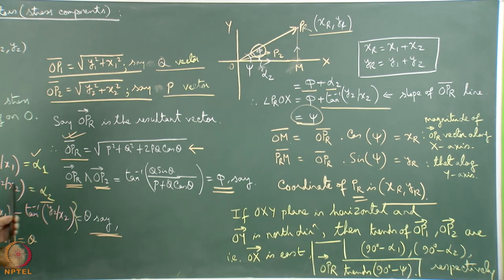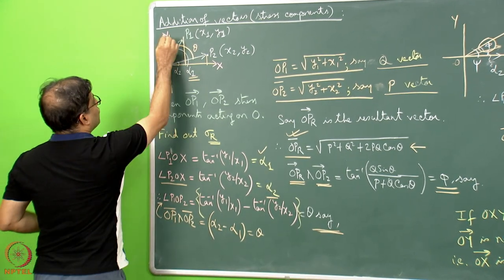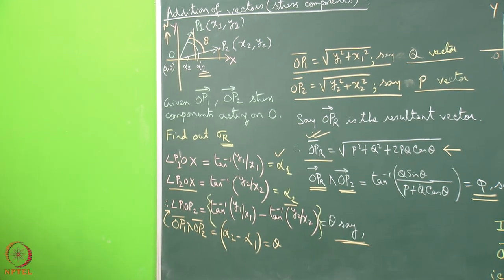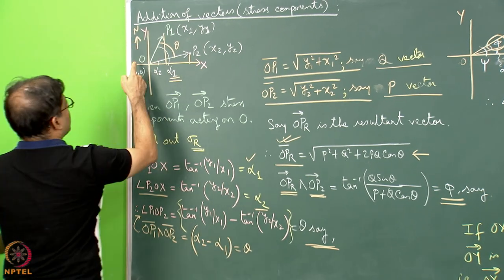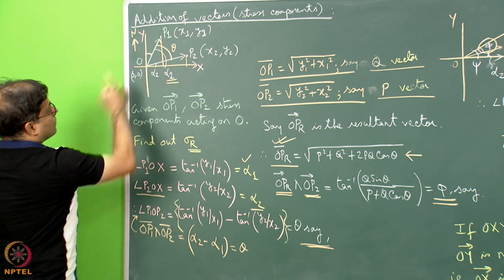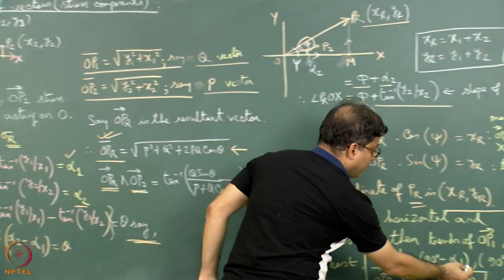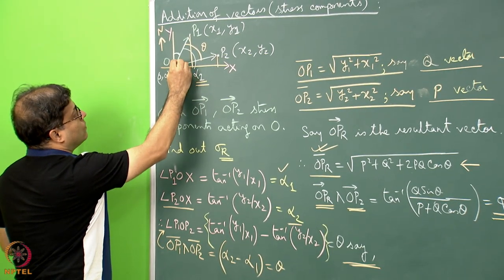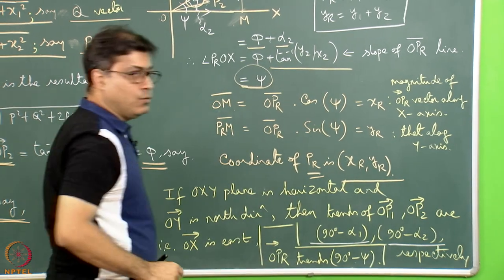Now consider the Oxy plane as horizontal — suppose this green board is a horizontal plane — and further consider that the direction O towards y is the geographic north direction. Here we are linking the school-level problem into a geological problem. If O towards y is the north direction, then the angle from north to OP1 will be the trend of OP1, which is 90 degrees minus alpha1. Similarly, 90 degrees minus alpha2 gives the trend of OP2. These are the trends of the two given stresses OP1 and OP2.